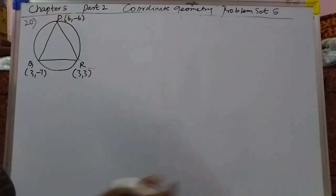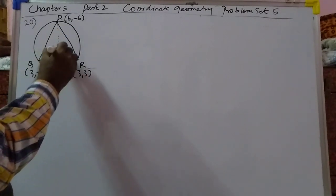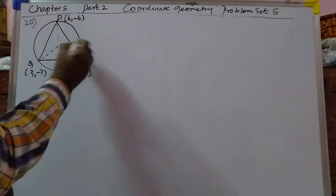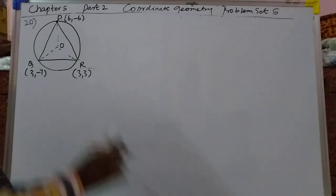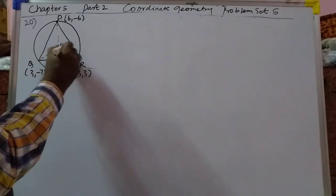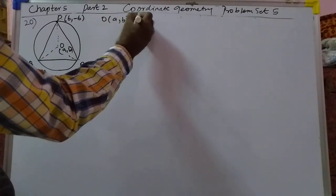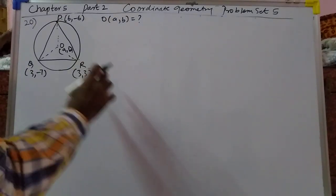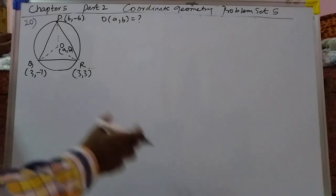So again, some central problem. It's a bit difficult but you have to learn it. So take it. A comma B, let us call it the circumcenter. So A comma B is the circumcenter. The distance formula is correct here.